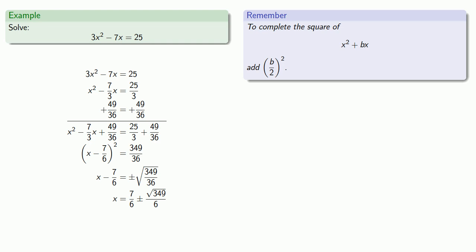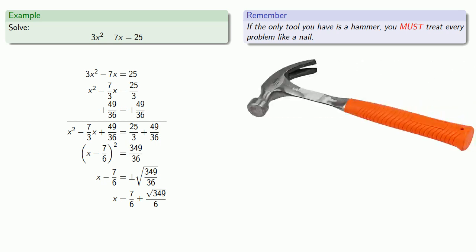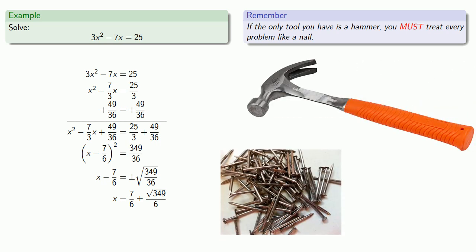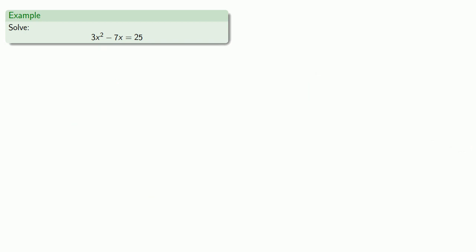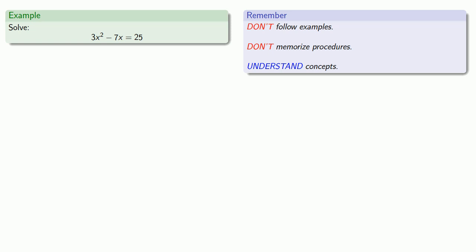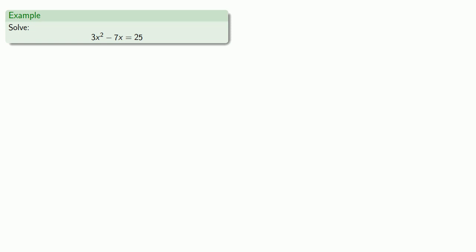And the thing to remember is this. If the only tool you have is a hammer, you must treat every problem like a nail, no matter how bad an idea that might be. And the way forward is this: remember, don't follow examples, don't memorize procedures, but understand concepts. And the whole idea here is that we'd like to have an expression that is a perfect square. And so if we expand (a + b)², we get a² + 2ab + b². What we want is something that looks like the right-hand side.